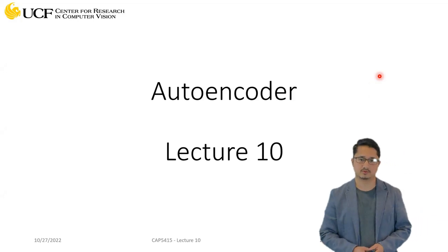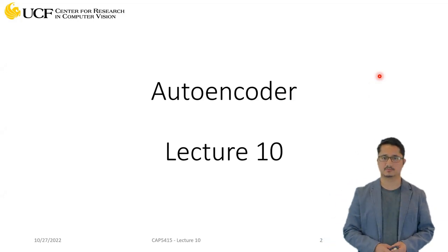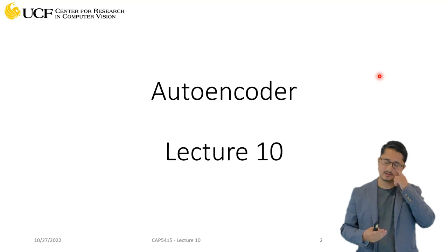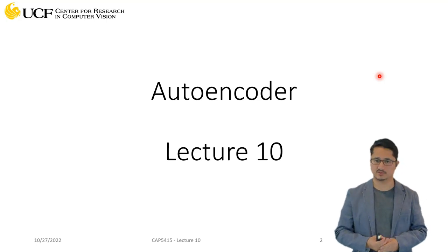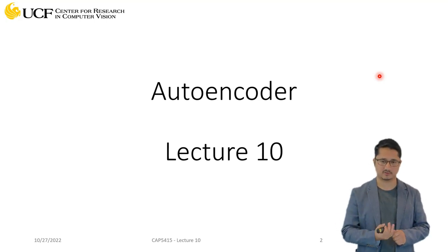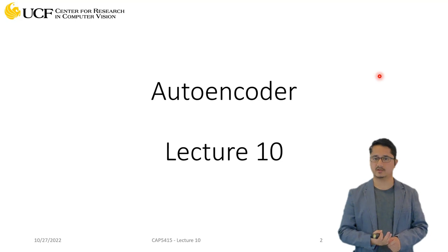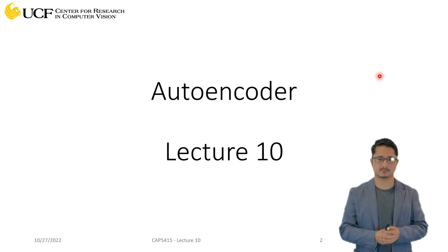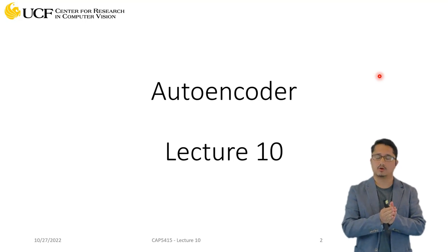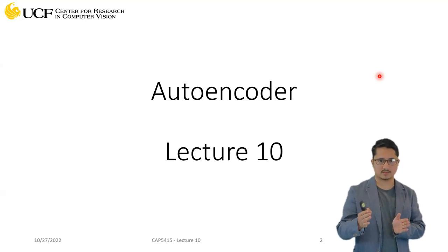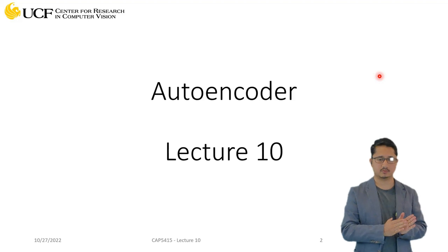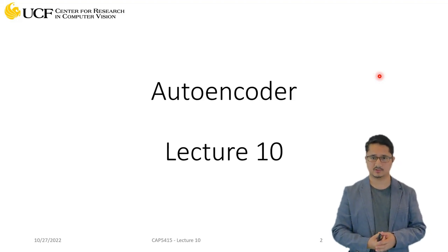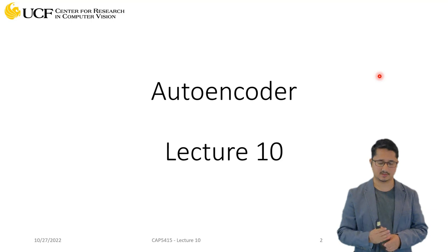The next lecture is on autoencoders. In the previous lecture, we saw how we can use classical computer vision algorithms to extract features from images. We studied HOG histogram of gradients, SIFT features, and how to detect key points in images. Now autoencoders represent a shift from classical computer vision to learning-based or data-driven approaches, which is towards deep learning.